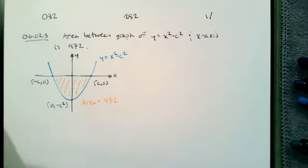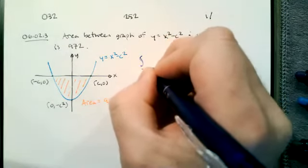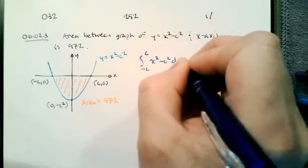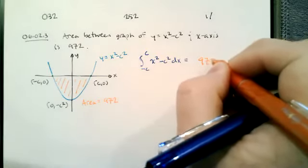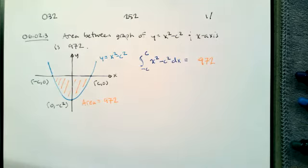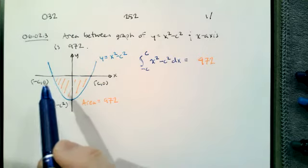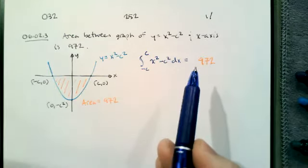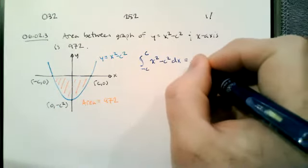What that means in terms of the definite integral is that if we integrate from negative c to c, the function x squared minus c squared with respect to x, we'll get a value of 972. But this integral is not going to equal 972. Since the function is below the x-axis, we're going to get a negative 972.